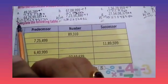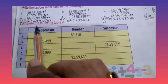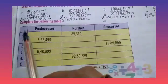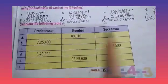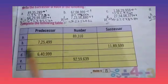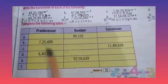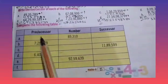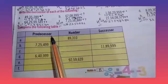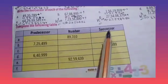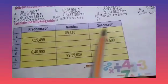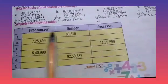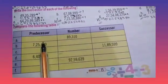Now, question number 3: complete the following table. Here the table is given and numbers are also given somewhere. We have to find the predecessor and successor. If the predecessor and successor is given, we have to find the number.